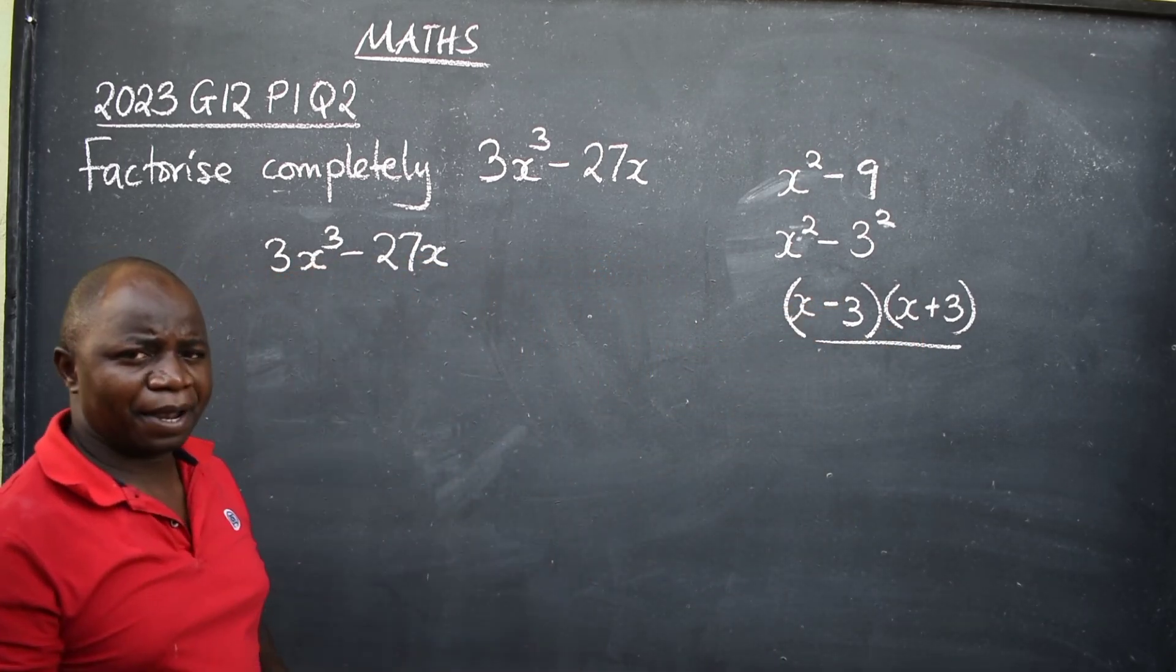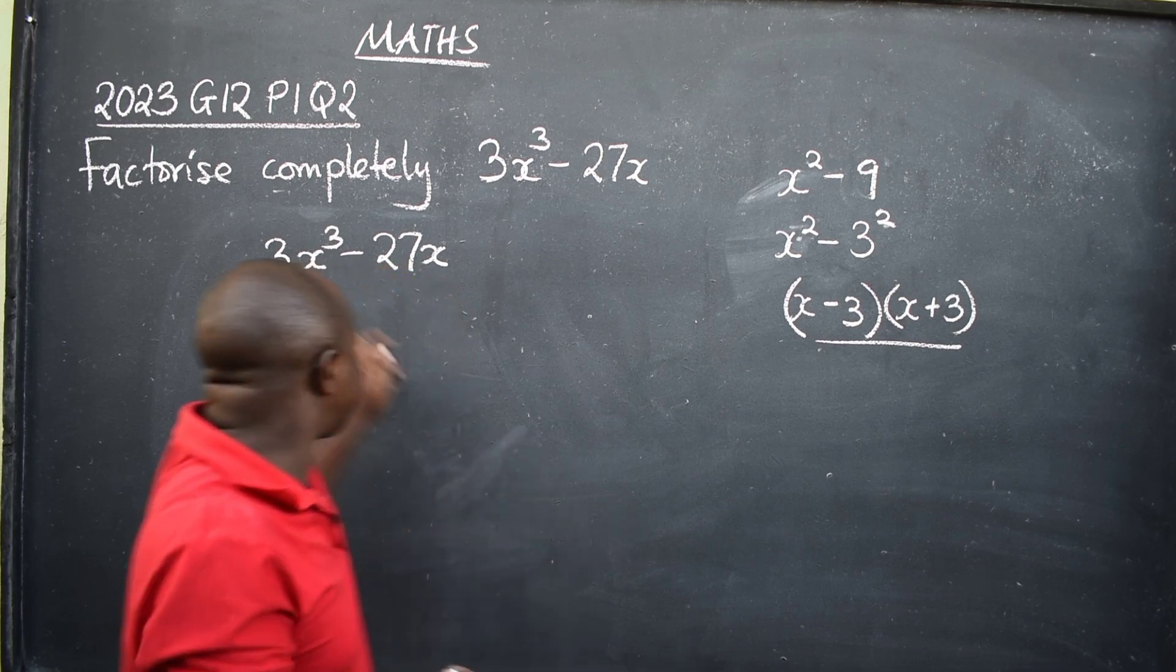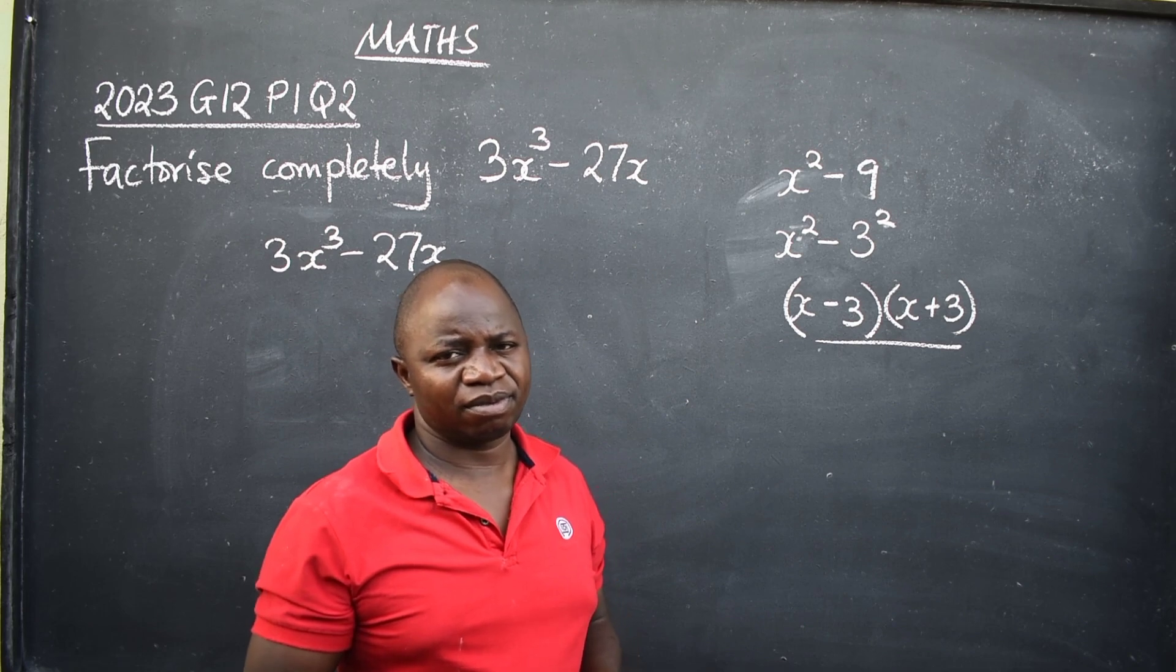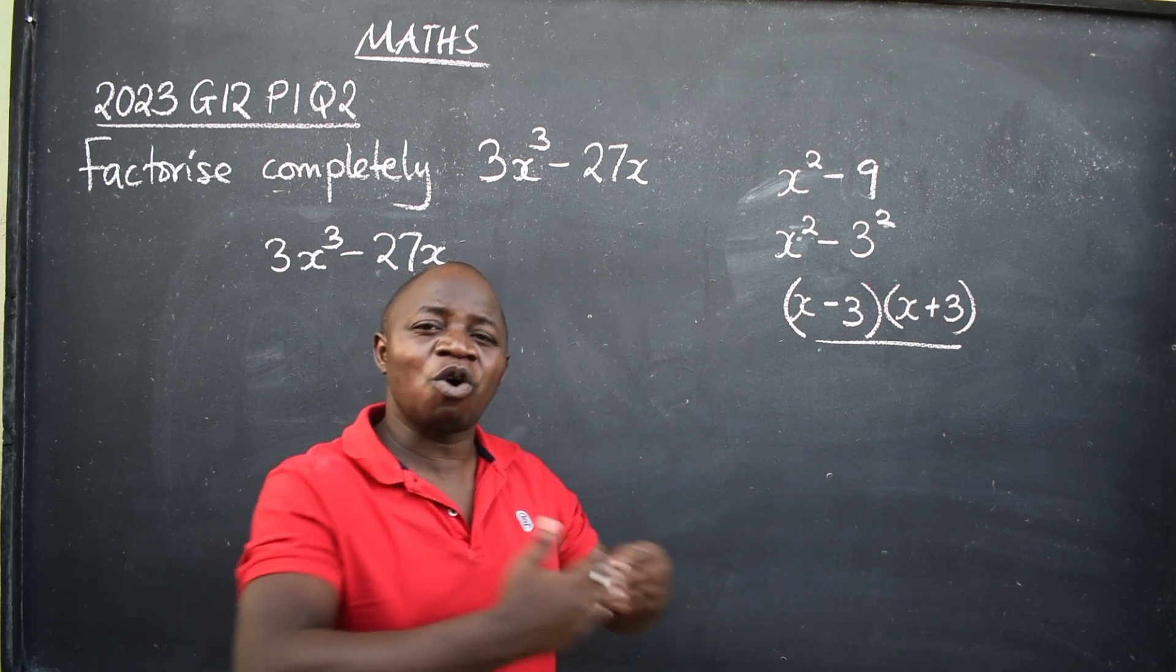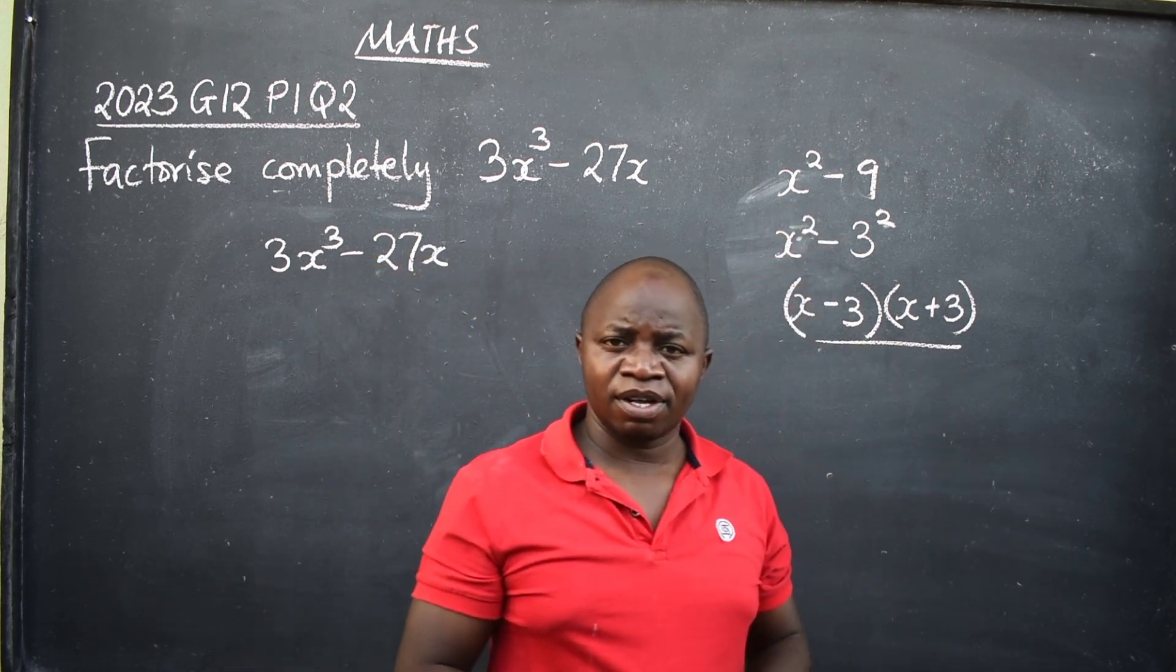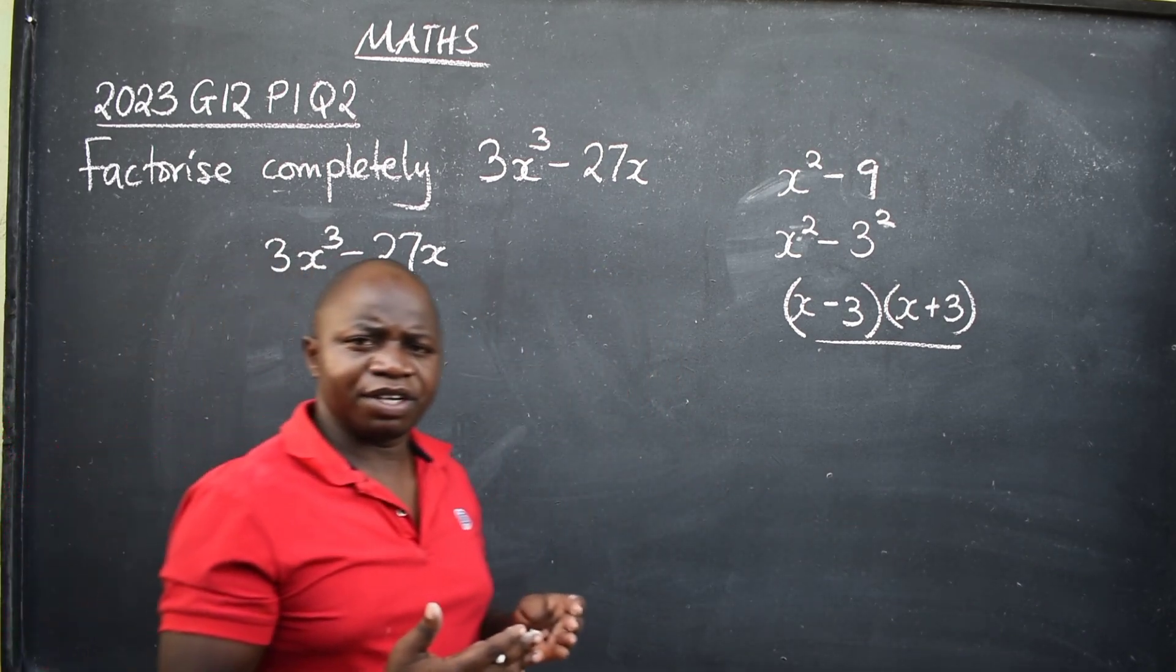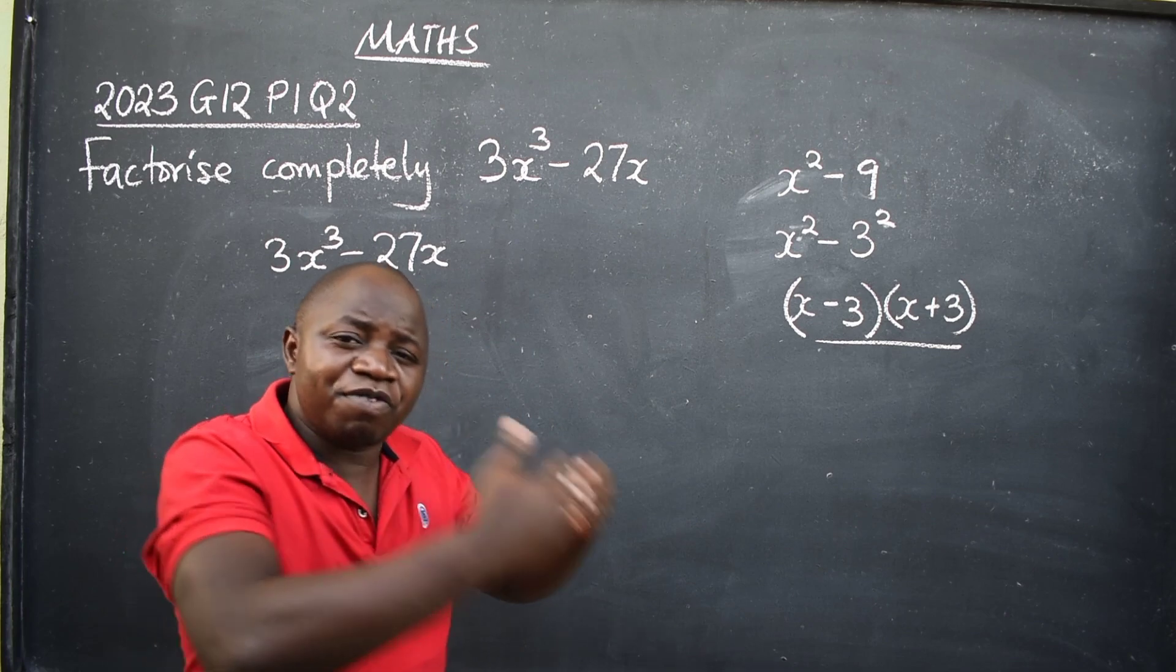Now getting back to our question here. Can I express 3 in square form? Can 27 be expressed in square form? The answer is no. At that stage, what do you have to do? You have to perform common factorization that will take you to difference of two squares. This one was direct, but this one here is different. I cannot change 3 or 27.